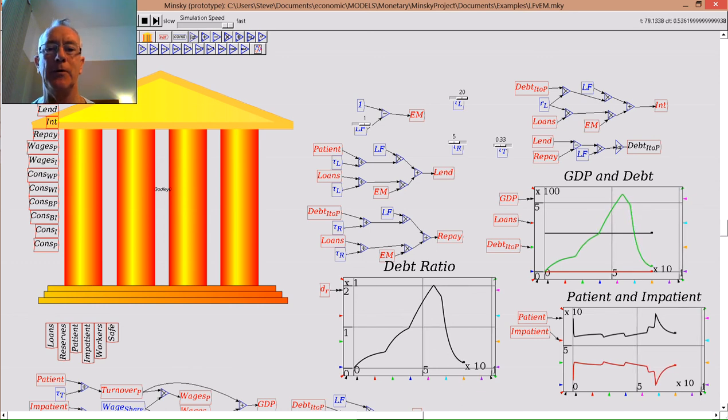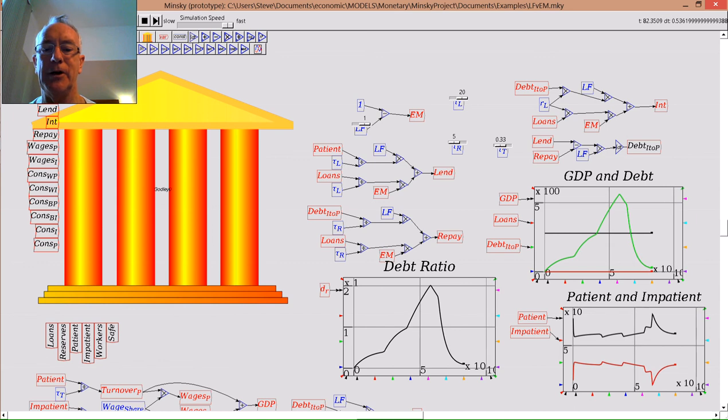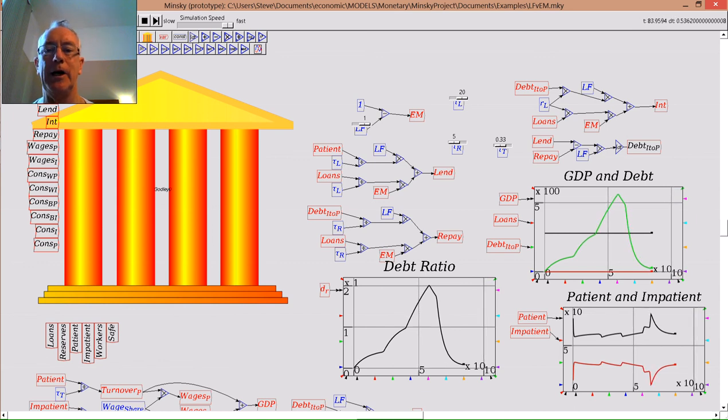So in loanable funds, from this point of view of the world, it doesn't matter. The debt level ratio can be ignored. It's macroeconomically unimportant.